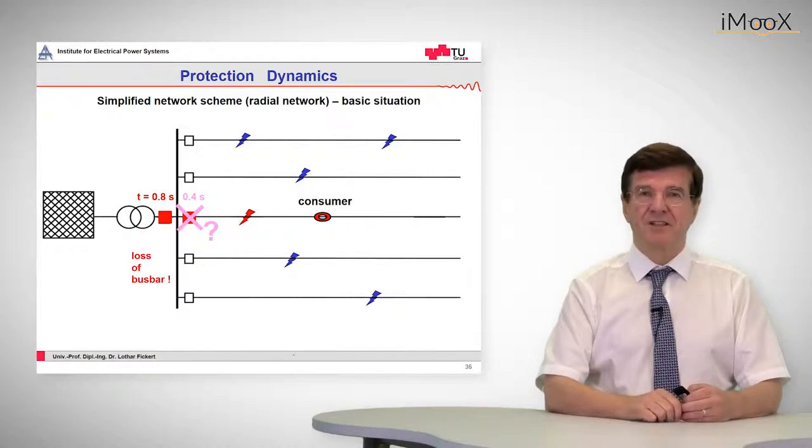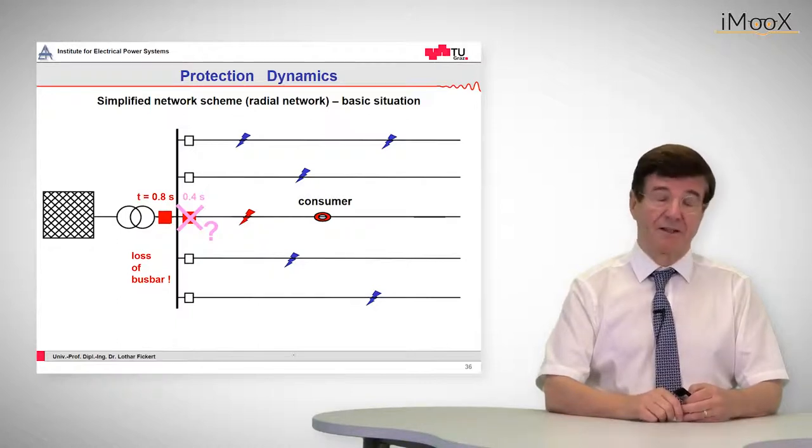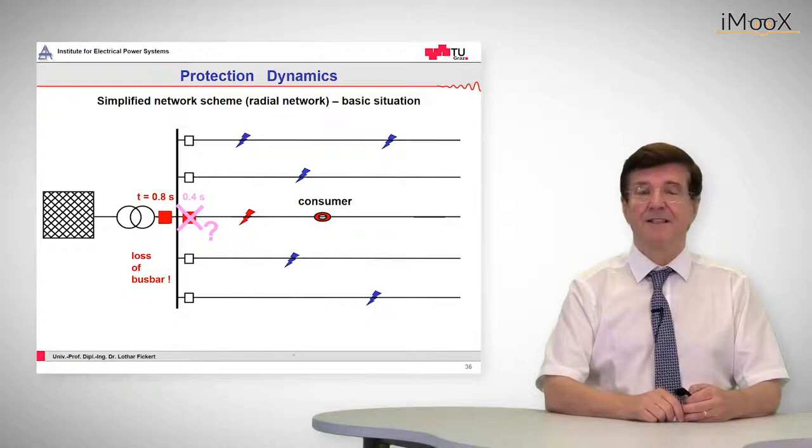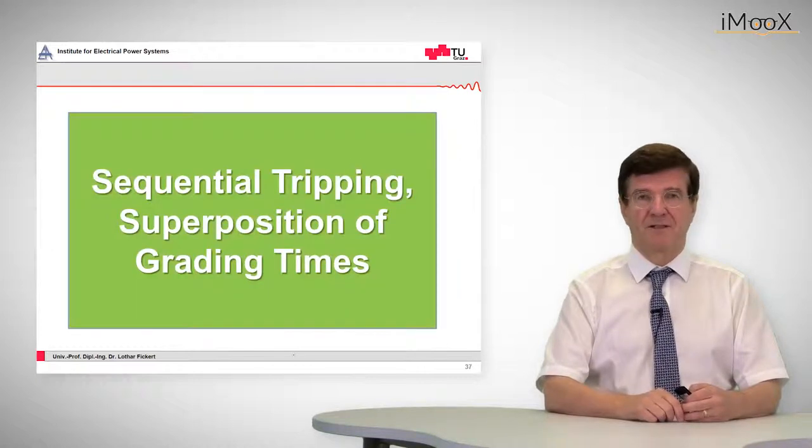So then the situation is cleared, the fault is cleared, but the disadvantage is that when this backup relay comes in that we will lose the whole bus bar.